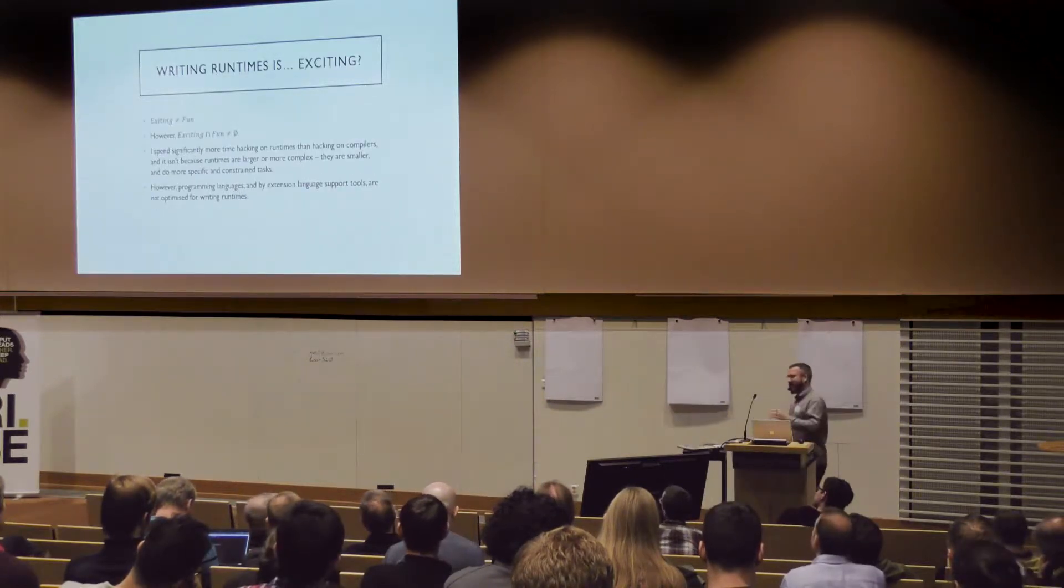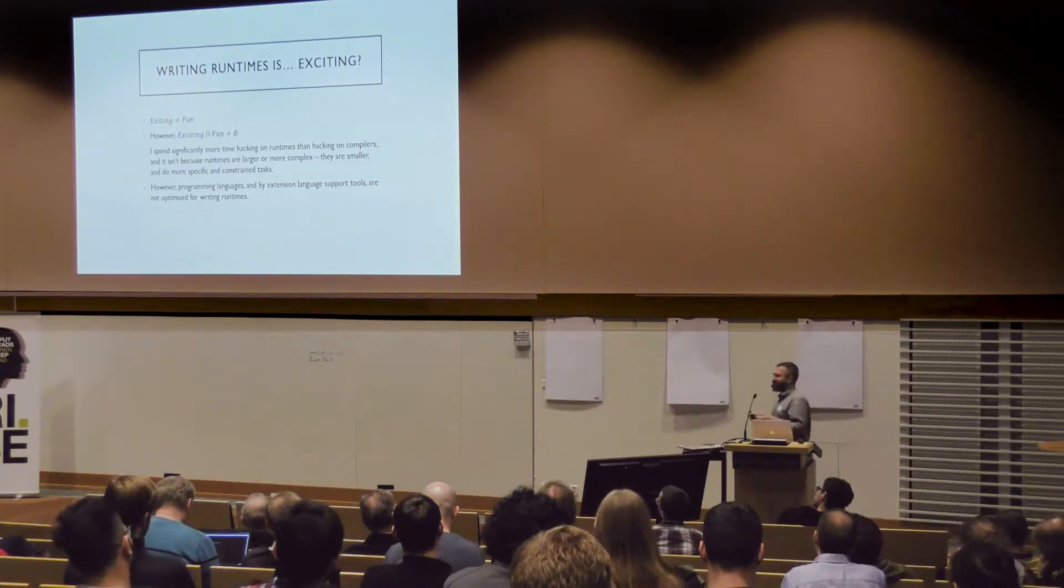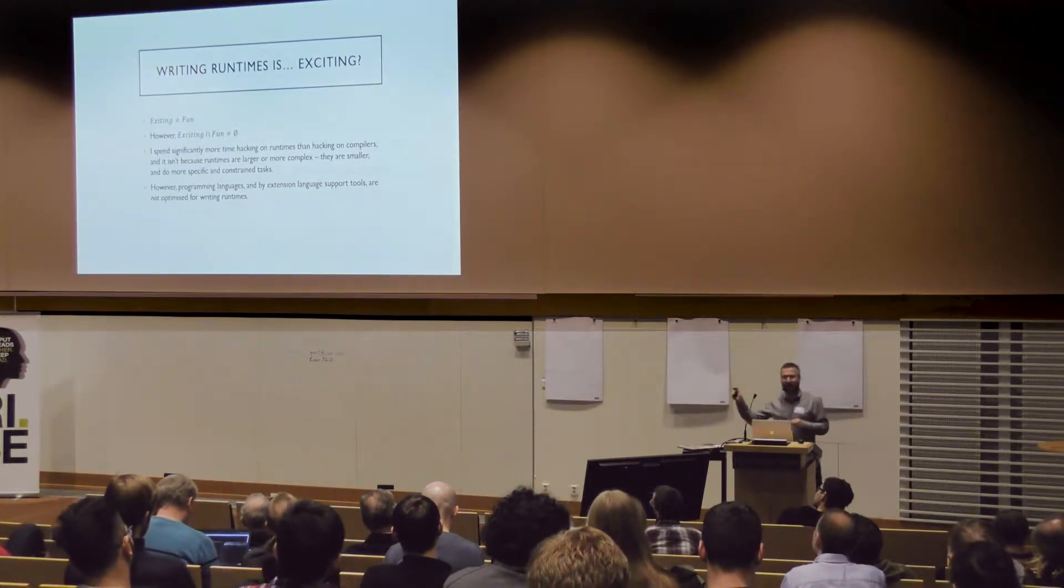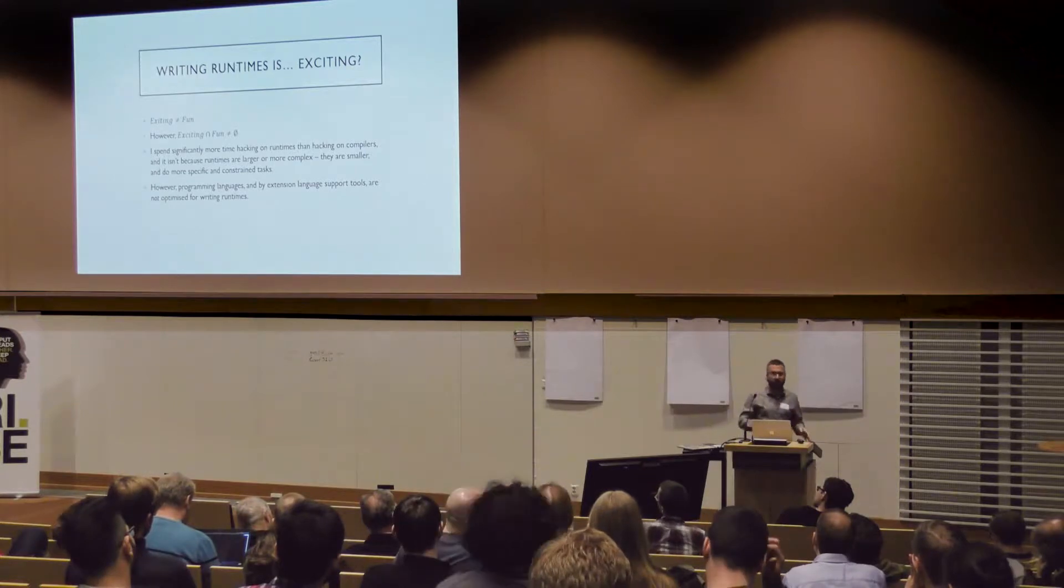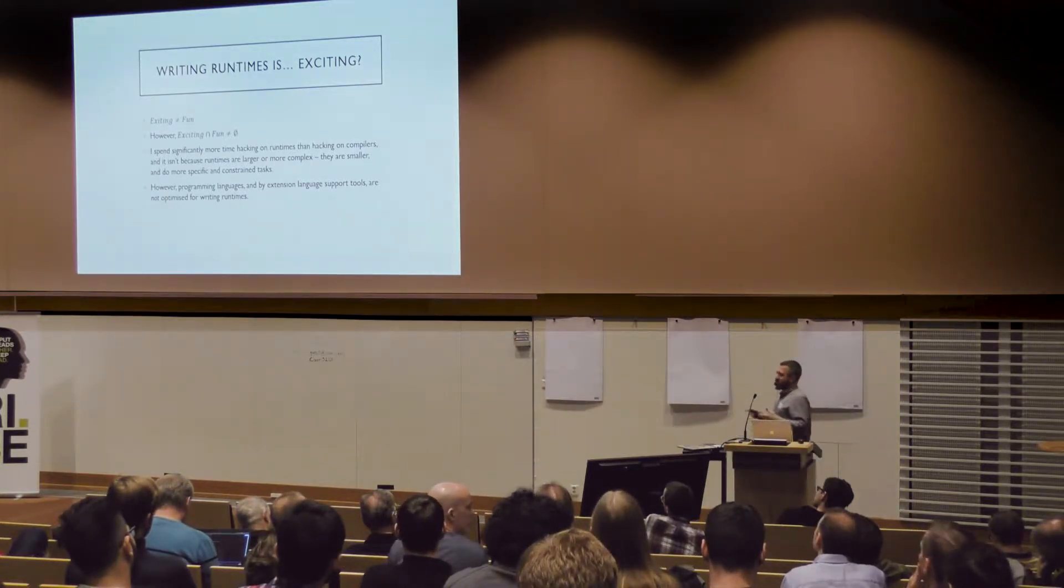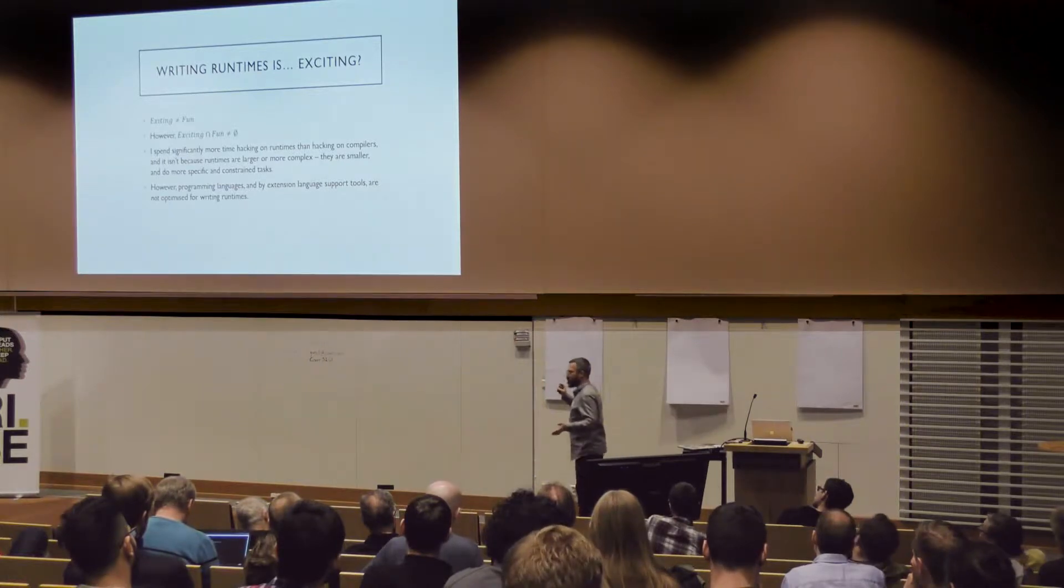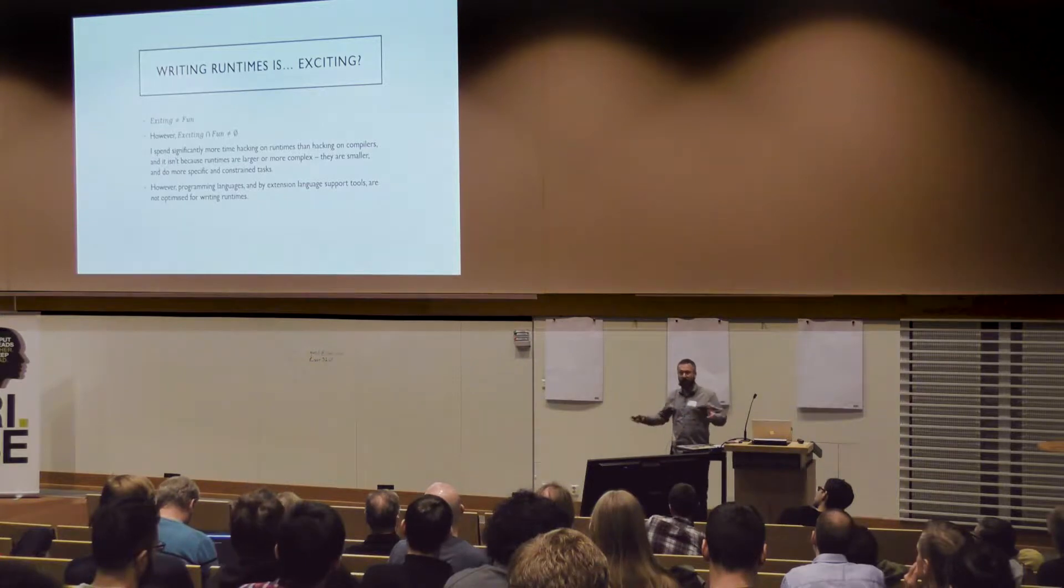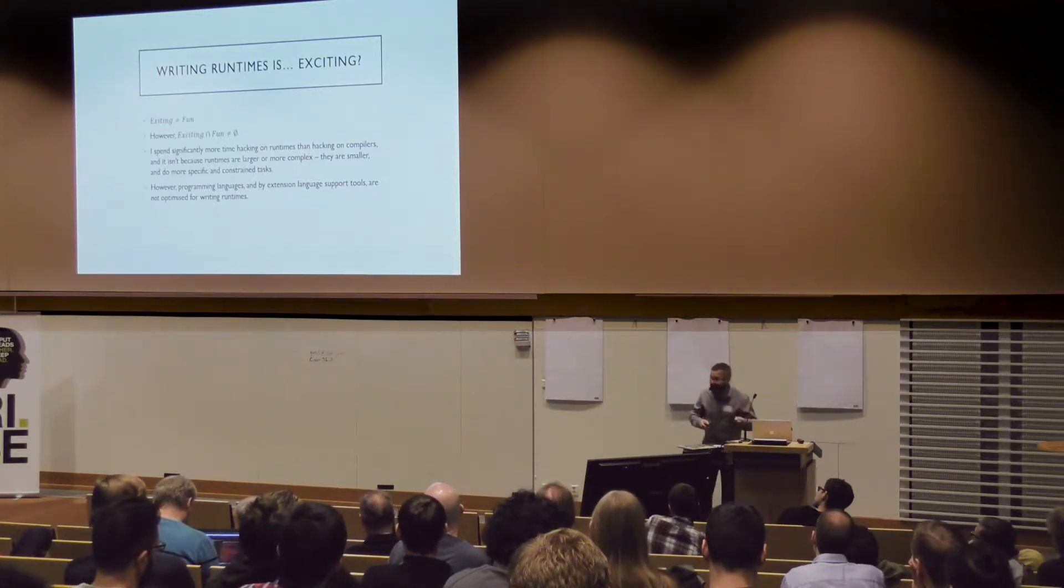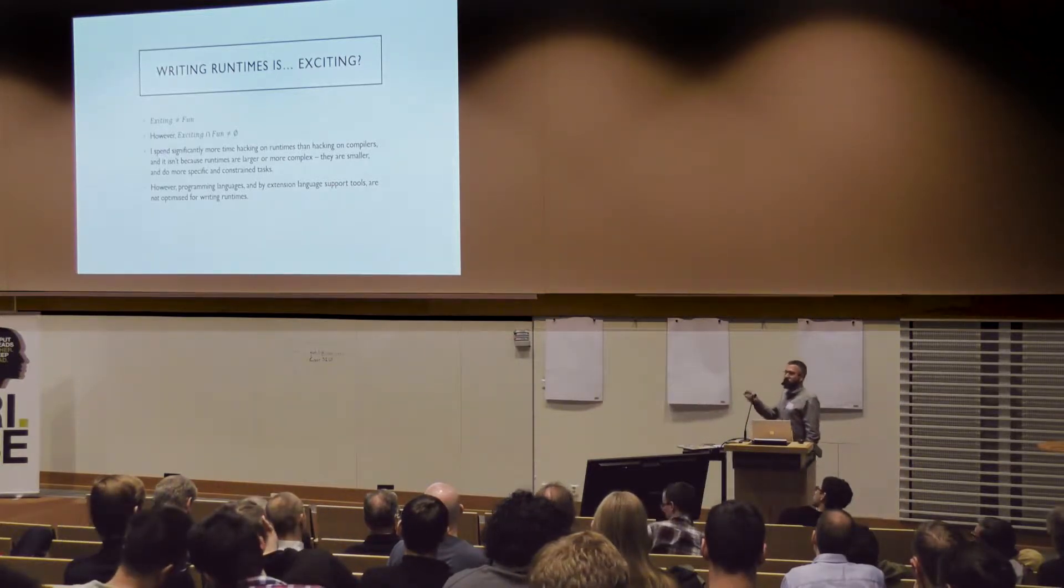Unfortunately, writing runtimes is exciting. And exciting is not the same thing as fun. I hope there's a little bit of overlap there, but sometimes I do wonder if that really is an empty set. And I spend significantly more time writing runtimes than I do writing programming languages. That said, just as an example, the Pony compiler itself is relatively big these days. I think it's up to about 50,000 lines of code. And the runtime is pretty compact. It's about 8,000 lines of code. And that includes a memory allocator, a garbage collector, a work-stealing scheduler, asynchronous I/O, all this stuff. It's much smaller. And actually, it does a smaller task. The compiler does something actually fundamentally more complex. But I spend more time on the runtime because it's so much more difficult to write and to debug.